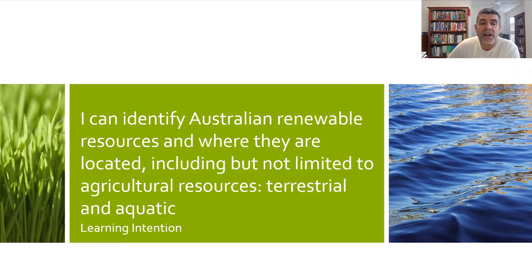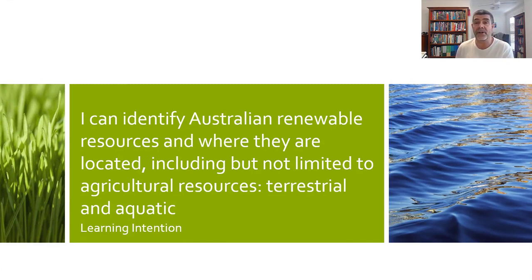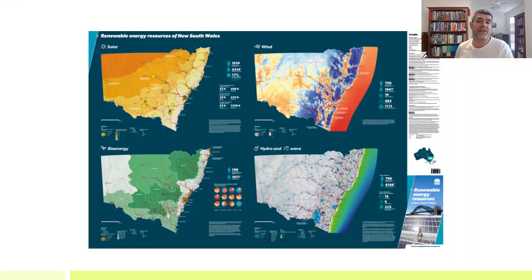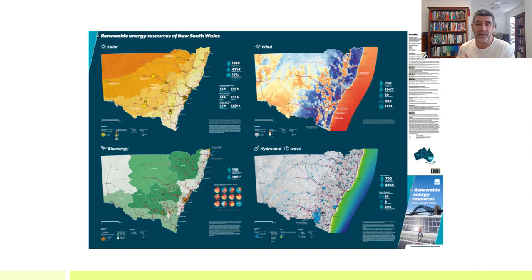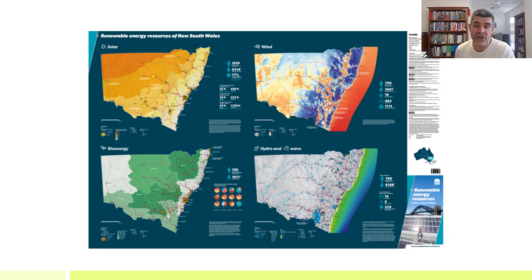For this particular video, we're trying to identify Australian renewable resources — where they're located — including, but not limited to, agricultural resources both terrestrial and aquatic. The first thing we need to do is define renewable resources. Renewable resources are those resources obtained naturally that are constantly replenished: sunlight, wind, waves, biomass, water, and also geothermal when talking about energy generation.